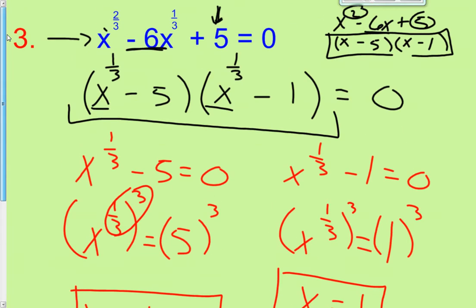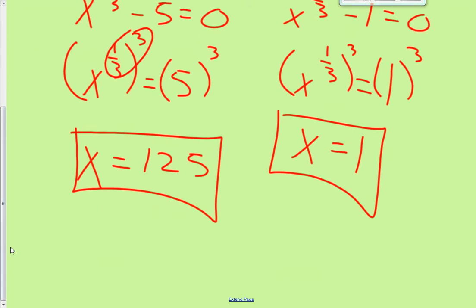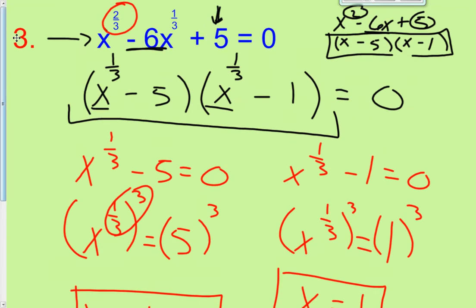Just to let you know, the degree trick doesn't apply for fractional exponents — we're not going to get 2/3 of an answer; we get two answers. One nice thing is you can always check your work: put 125 back in for x. 125 to the 2/3 minus 6 times 125 to the 1/3 plus 5 gives 0 equals 0, so it checks out.